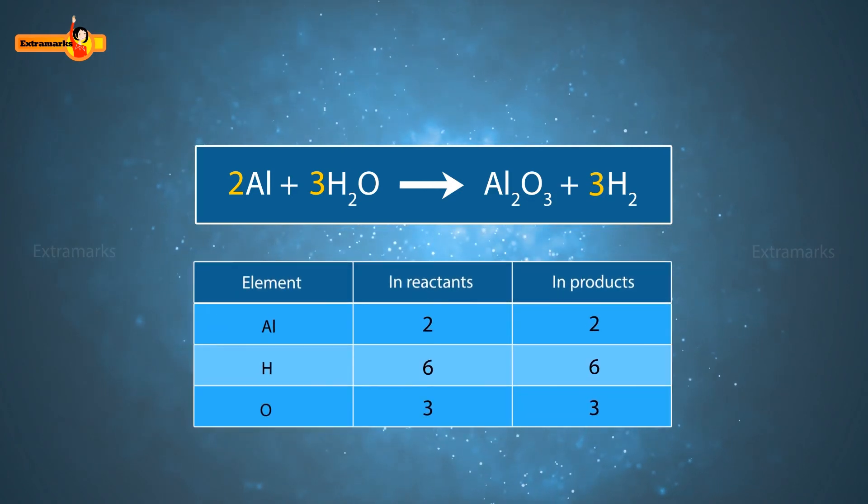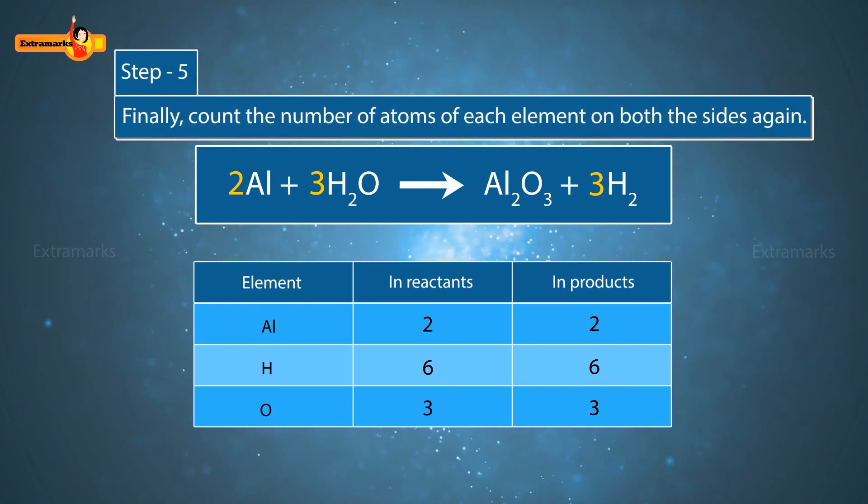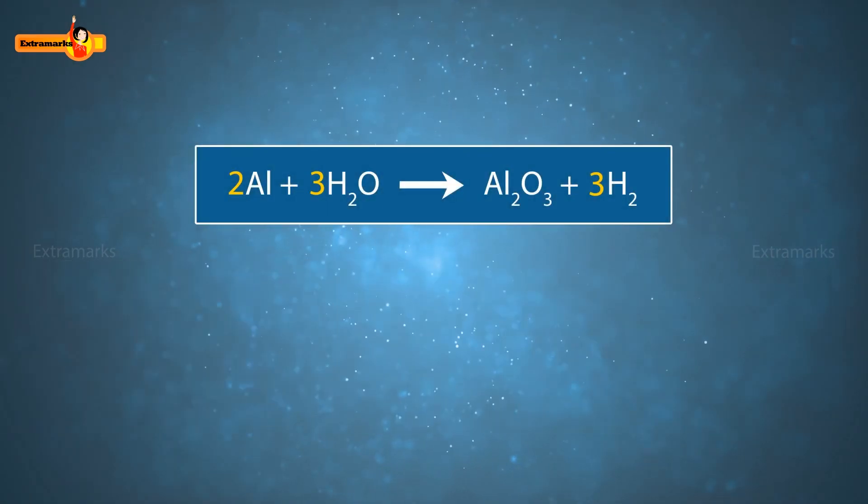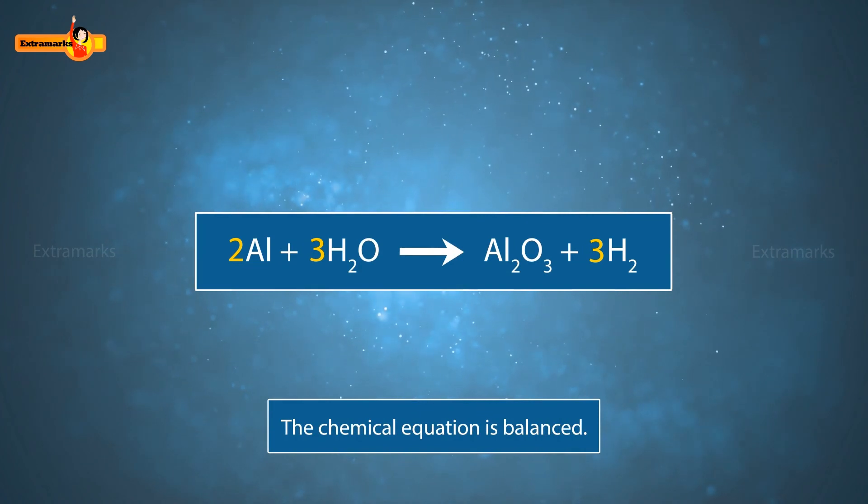Now, count the number of atoms of elements on each side of the arrow. And finally, count the number of atoms of each element on both the sides again. This time, all the atoms on the reactant and the product side are balanced. Therefore, the equation is said to be balanced.